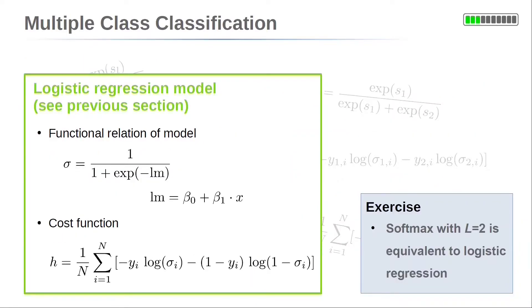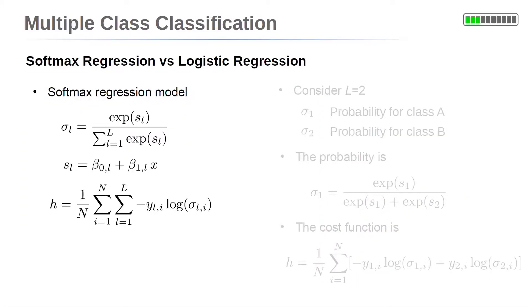Softmax regression is for two classes equivalent to logistic regression. In the following we prove this mathematically. This will help us to understand softmax regression better. The softmax regression model is summarized on the left side. Now we consider a two-class classification analog to the logistic regression model, so L = 2.